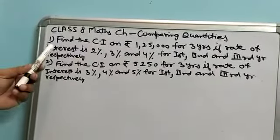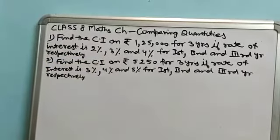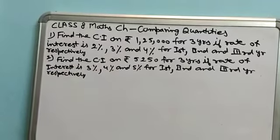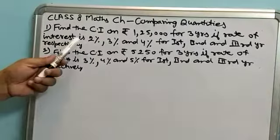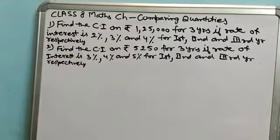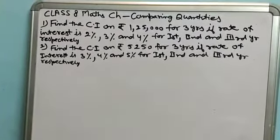Number 1, find the compound interest on rupees 1,25,000 for 3 years if the rate of interest is 2%, 3%, 4% for 1st, 2nd and 3rd year respectively.